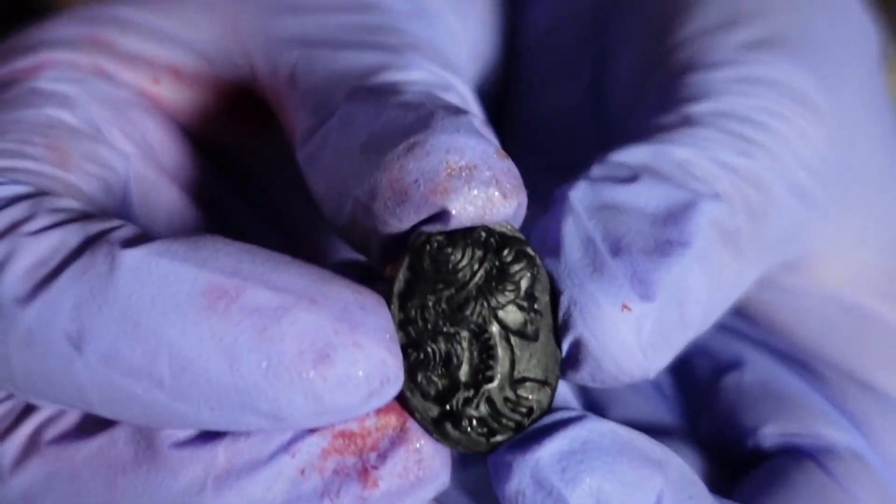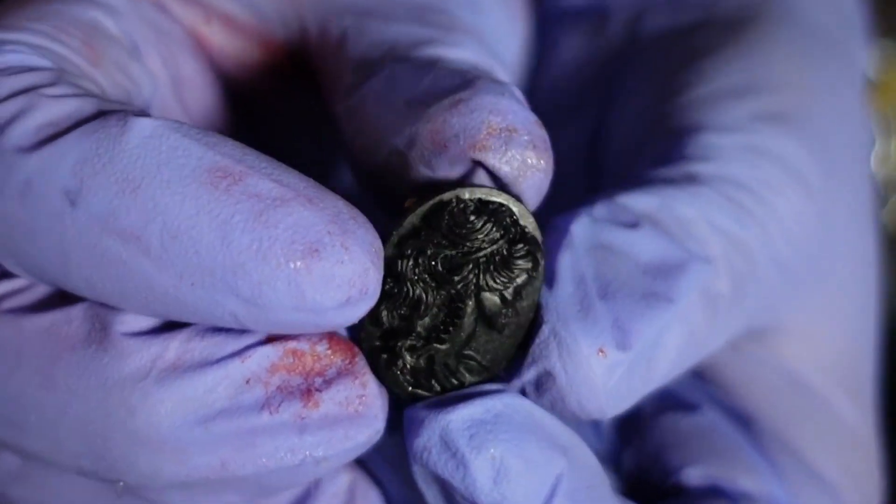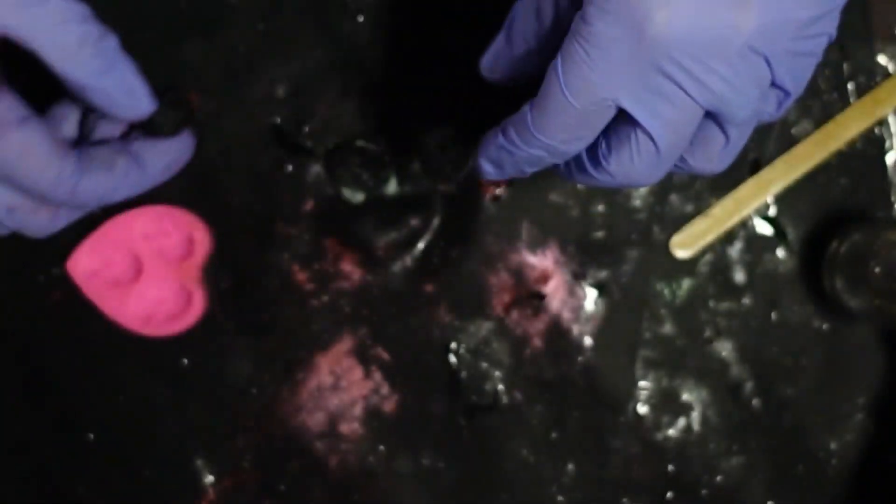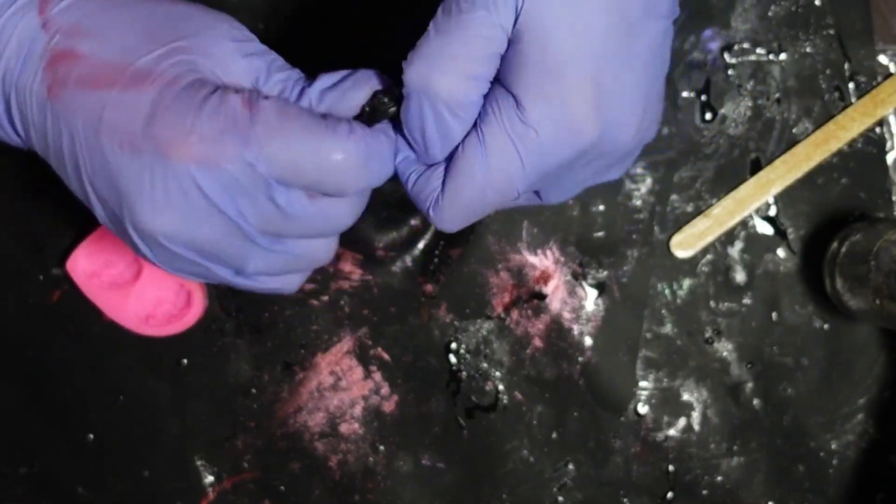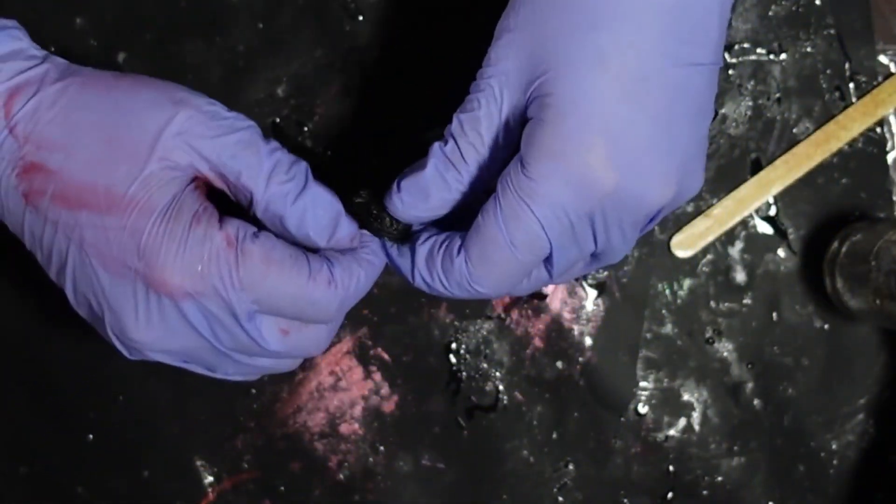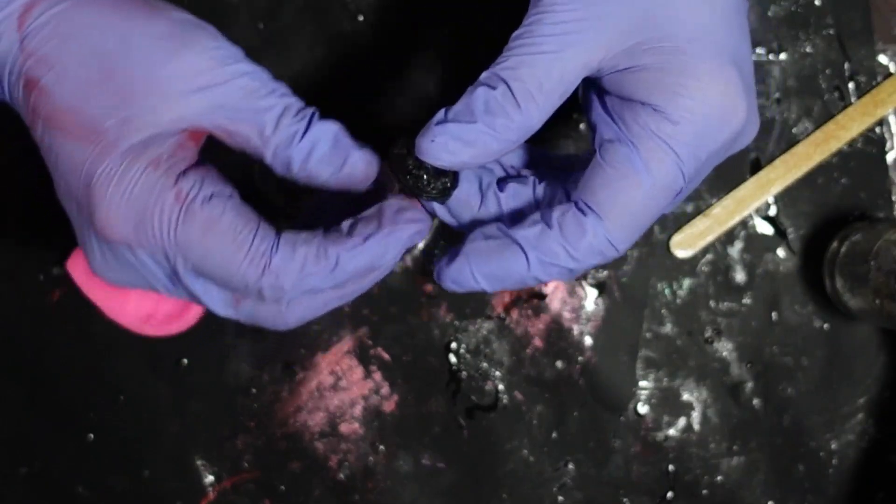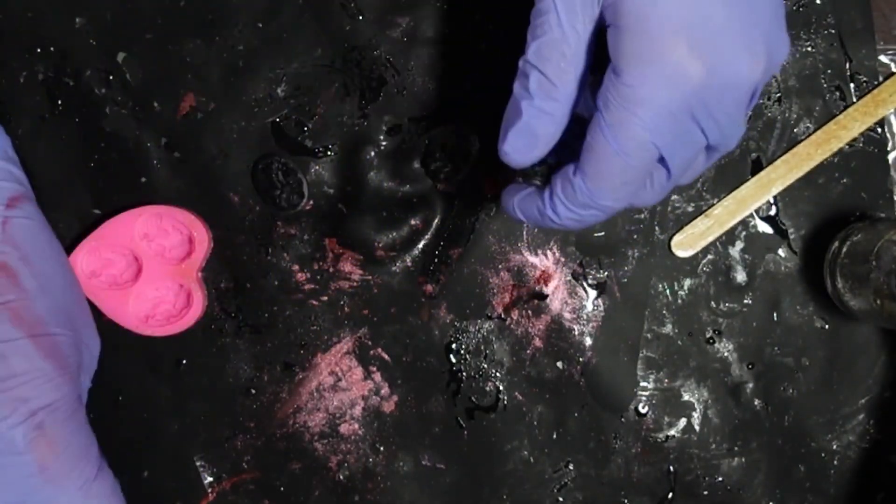So here you see the close-up and there's tons of detail on here. Honestly, I could have probably dusted the mold with mica and saved myself a step of painting, but based on what I want to do with this, I think that these are the perfect base for what I want to do.